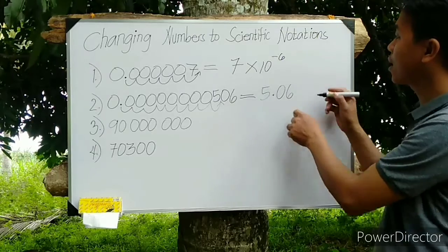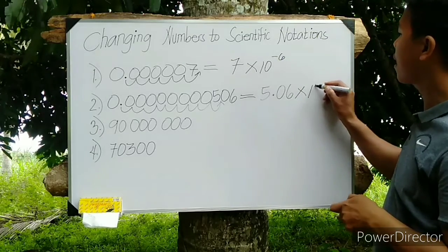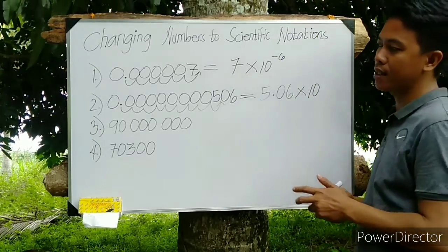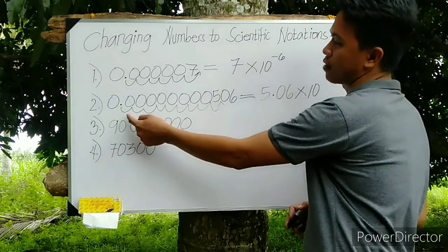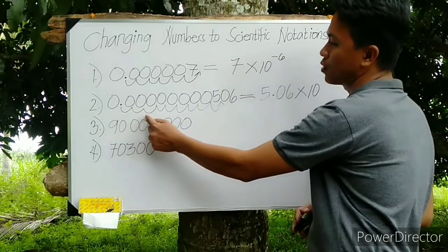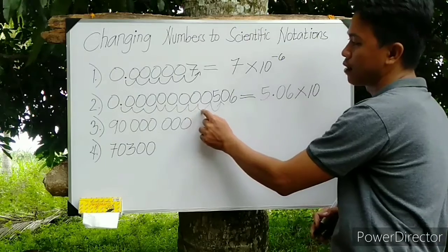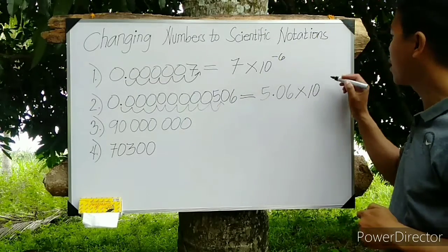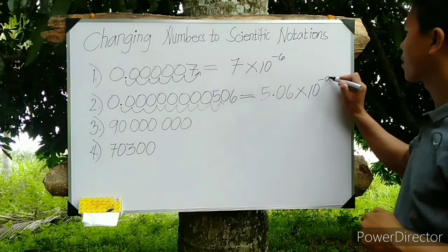So the value of A now is 5.06 times 10. Then the movement is how many units? Let's count: 1, 2, 3, 4, 5, 6, 7, 8, 9. So the power is negative 9.